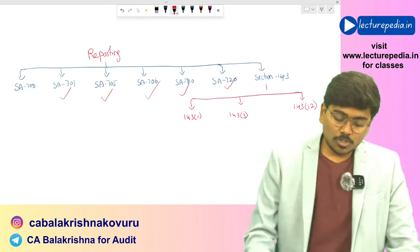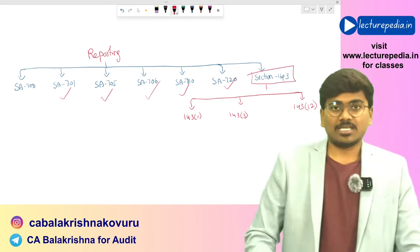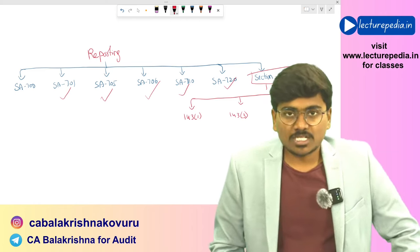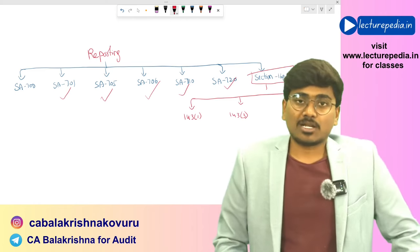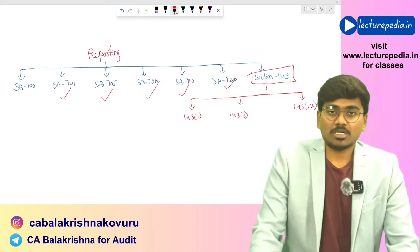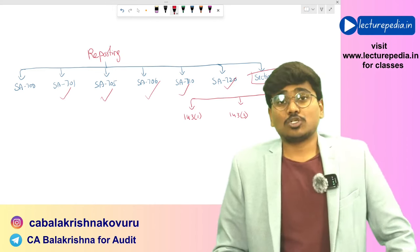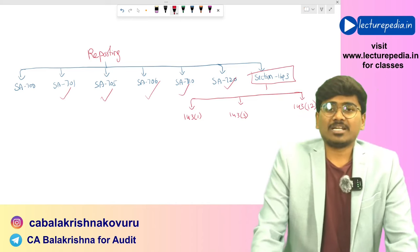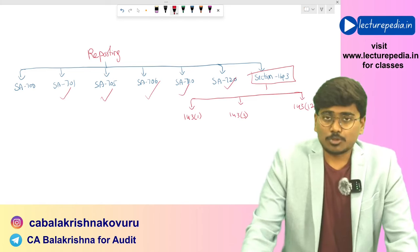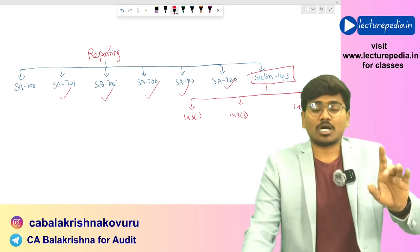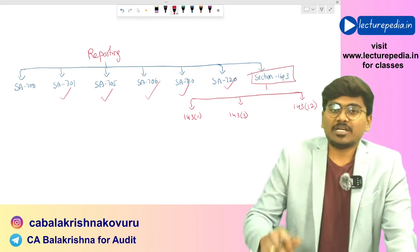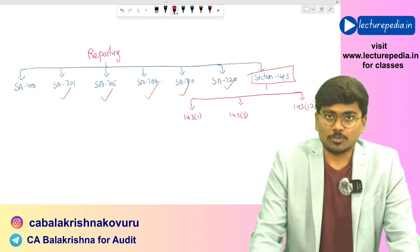Apart from these standards, we will also be discussing Section 143 of the Companies Act. Under Section 143(1) there are 6 points on which the auditor needs to inquire; under Section 143(3) there are points on which the auditor needs to report; and under Section 143(12) there is fraud-related reporting responsibility. CARO 2020 will be revised in a separate video and will not be covered in this video.